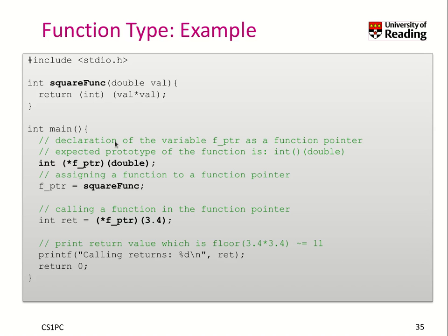Here's a concrete example. Imagine we have a function called square_func, which takes a double value, creates the square of it, and casts it as an integer. First, we declare f_ptr to be a function pointer variable pointing to a function that takes one argument of type double and returns an integer. This signature — integer return type, double argument — matches exactly our square_func. We assign f_ptr to square_func, call the function, and that produces the expected output.